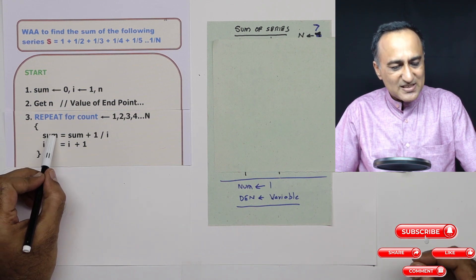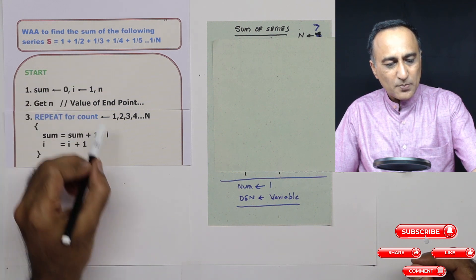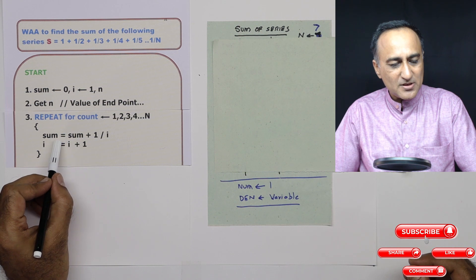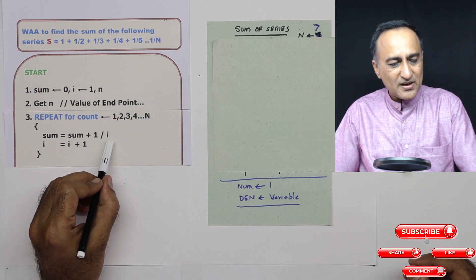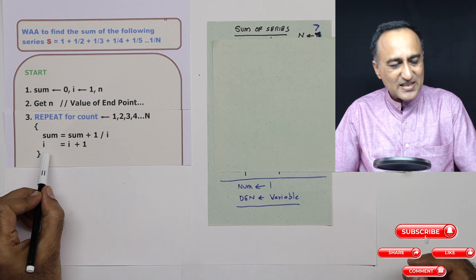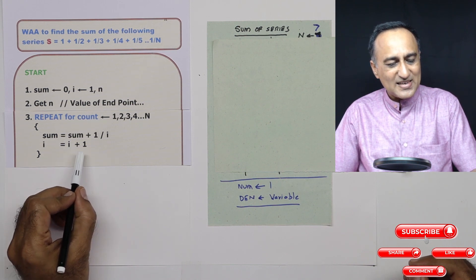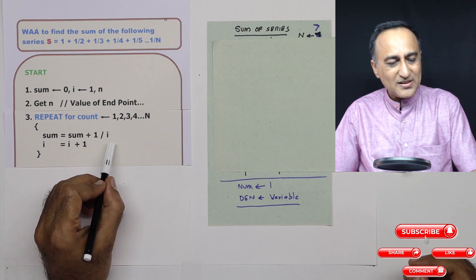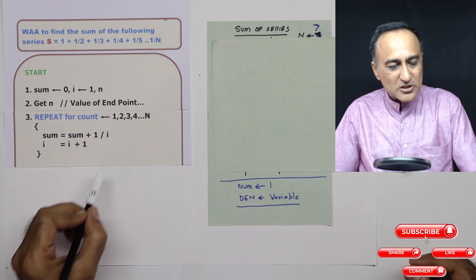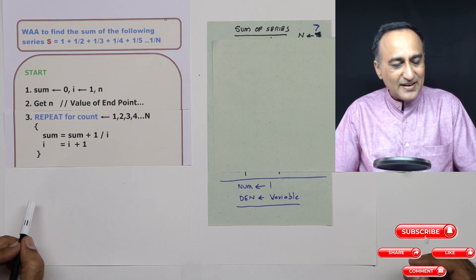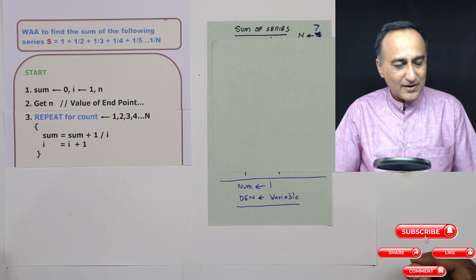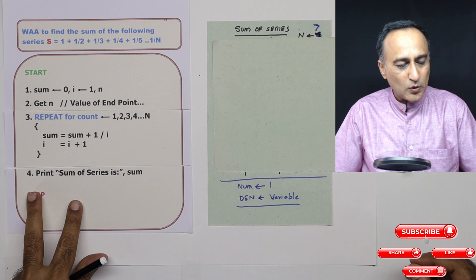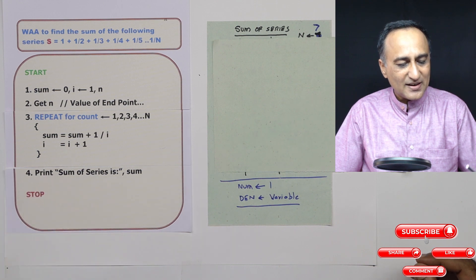So sum is sum plus — initially 1 upon 1 — then i becomes 2, so it will be sum is equal to sum plus 1 upon 2. Then next time i becomes 3, so sum is sum plus 1 upon 3. This particular process will keep happening till the count is equal to the value of n, at which point I am simply going to print this particular series.